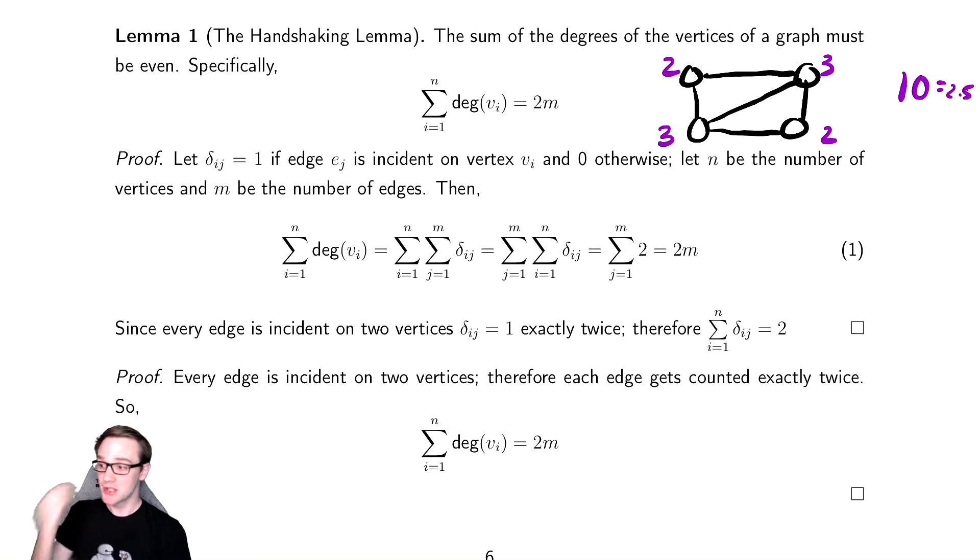So if you add up the degree of every vertex, each edge gets counted twice. So the total degrees in the graph is two M. Done.